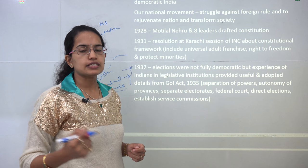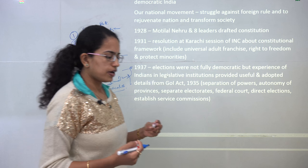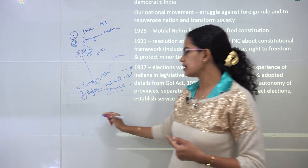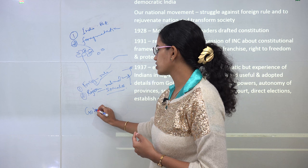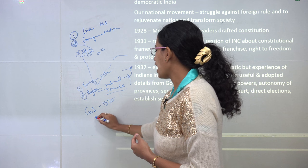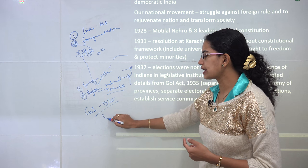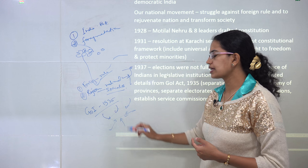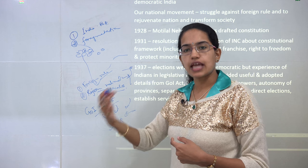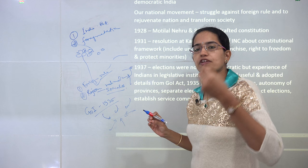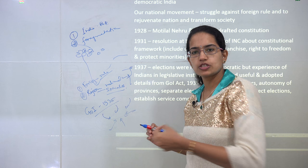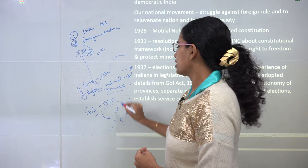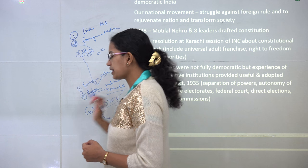In laying down the constitution, there were two major parameters: internal factors and external factors. The most important internal factor was the Government of India Act 1935, and among external parameters, ideas were taken from the constitutions of various nations — France, United States, Canada, and so on. Different important aspects from each nation were amalgamated into the written constitution of India.